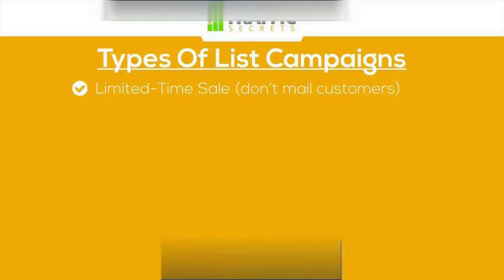The first one is a limited time sale. If you're selling anything, you don't want to mail your customers on a product they already own. Your email list typically has prospects — people that opted in but have never bought from you — and also your customers' email addresses. You want to communicate with customers when you sell products they don't already own, but if you do a limited time sale on a product they've already bought, don't mail those people. Set that up in your shopping cart or email marketing system so you're not mailing promotions to customers who already bought what's being advertised.